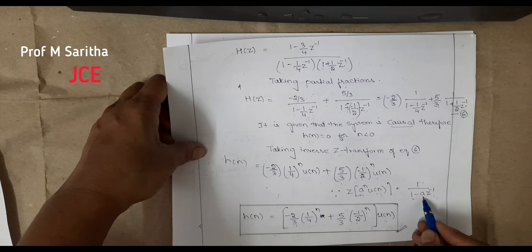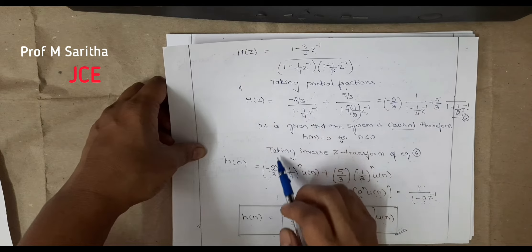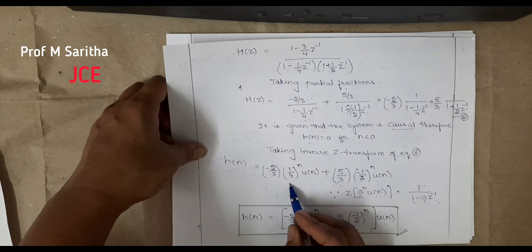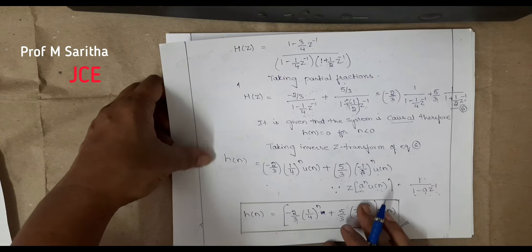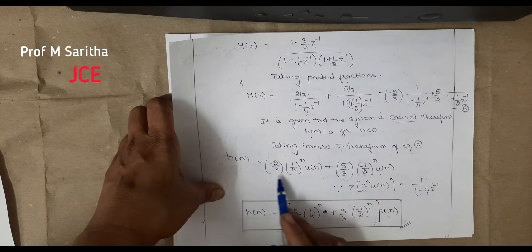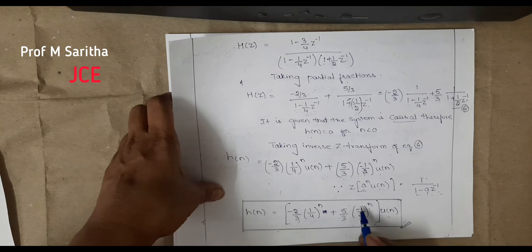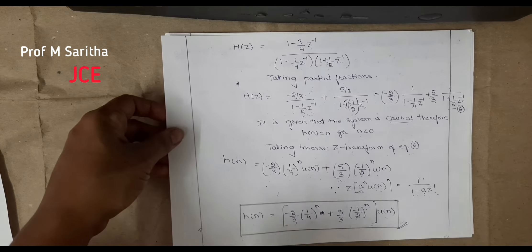This uses the formula: inverse Z-transform of 1/(1 − az^(−1)) is a^n u(n). Here a = 1/4 for the first term and a = −1/2 for the second. Taking u(n) common, the final impulse response is: h(n) = [(−2/3)(1/4)^n + (5/3)(−1/2)^n] u(n). This is the impulse response of the given system.